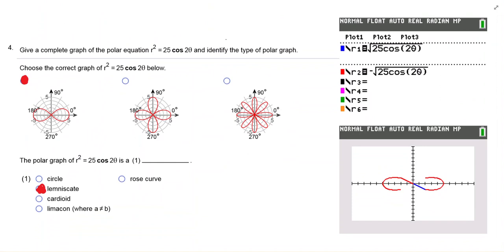For this one, r squared equals 25 cosine 2 theta. So if you were solving that for r, because we have to have just an r here. If you take the square root of both sides, you have r equals plus or minus the square root of 25 cosine 2 theta. So then I put that in two pieces. I had the positive piece here and the negative piece here.